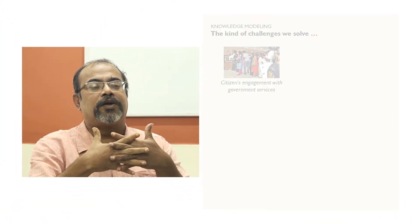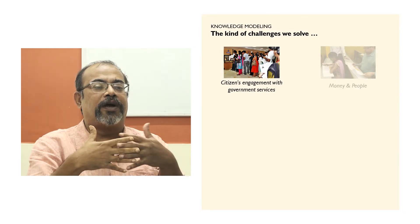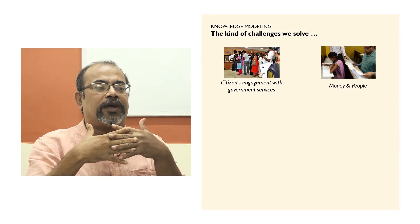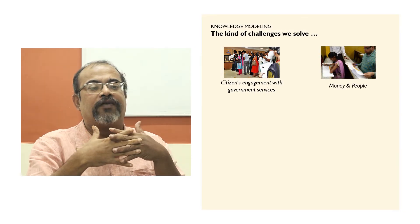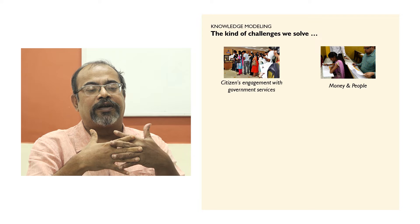So where do we apply knowledge modeling? In Illumin, we apply it wherever there is engagement in society. Can we make people's engagement with government better? How they engage with their personal money — how do they save, how do they invest — can we improve that?